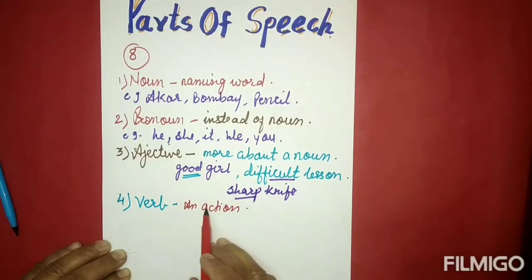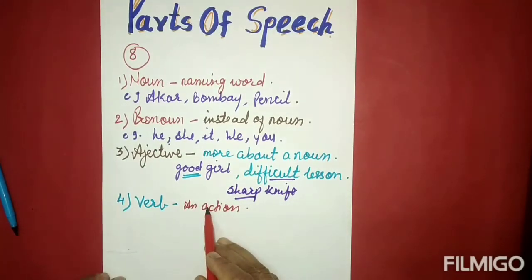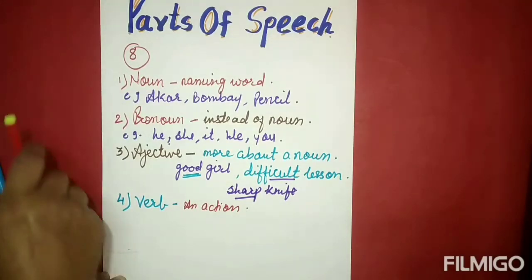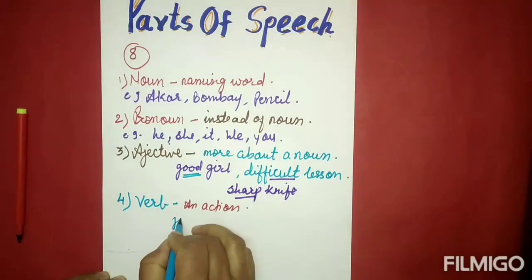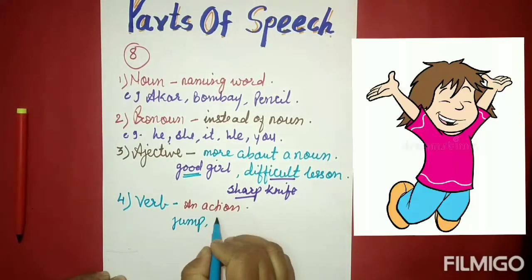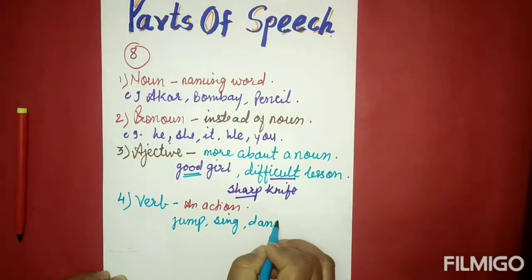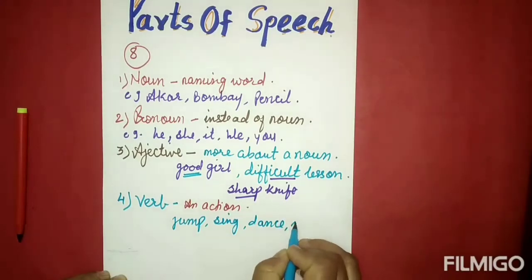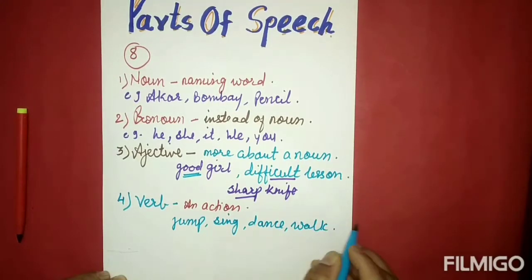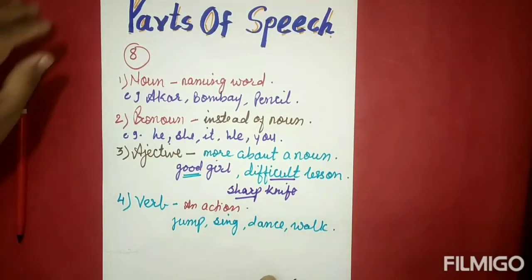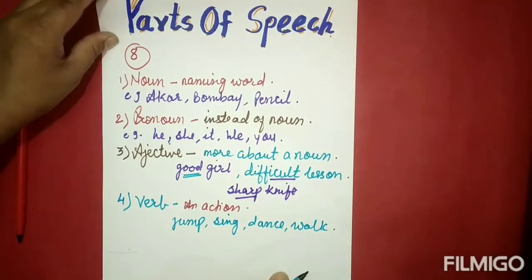Verb is a word used to express an action or state — it is an action word. For example: jump, sing, dance, walk, and so on — these all words are verbs. Now the next part of speech we'll see is the fifth, which is adverb.